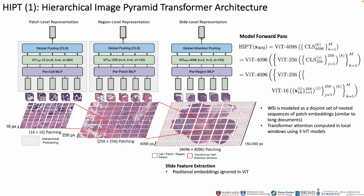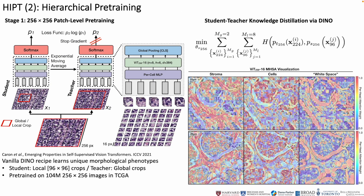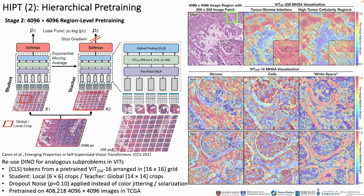Moreover, we hypothesize that the recursive nature of HIPT can enable ViT pre-training techniques to generalize across stages for high-resolution image pre-training. To pre-train HIPT, we first pre-train the patch-level ViT at the first stage using DINO, based on student-teacher knowledge distillation, noting unique properties in which the attention heads isolate unique visual concepts such as stroma, cells, and white space in the patch. Keeping our patch-level ViT frozen, we then pre-extract 256-sized features from each region and reuse DINO to pre-train the region-level ViT. We refer to this method as hierarchical pre-training. Though only the first two stages of HIPT are pre-trained, this method can generalize to any image resolution with sufficient data points.